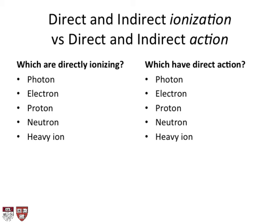To reiterate: for something to be directly ionizing, it has to have a charge. So a photon would be indirectly ionizing. Electrons and protons are directly ionizing — they can directly ionize. Neutrons are indirectly ionizing. So photons and neutrons have no charge — indirectly ionizing. Heavy ions, which are charged, would be directly ionizing, though you can also have indirect ionization. And then all of these could potentially have direct action.